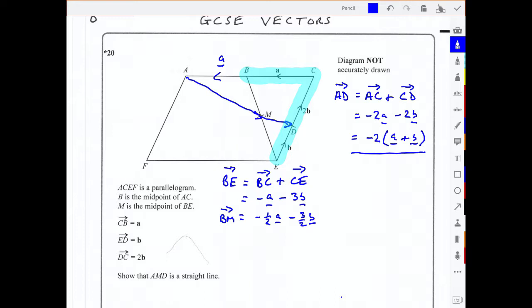And now I can say that AM is equal to AB plus BM. And AB is just minus a. And BM we've just found, so that's minus a half a minus 3 over 2b. So we add in a negative, we take it away. So what have we got? We've got minus a minus another half a, which is minus one and a half a, or minus 3 over 2a. And we've got minus 3 over 2b.